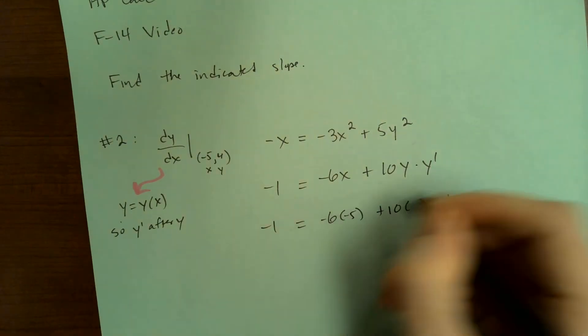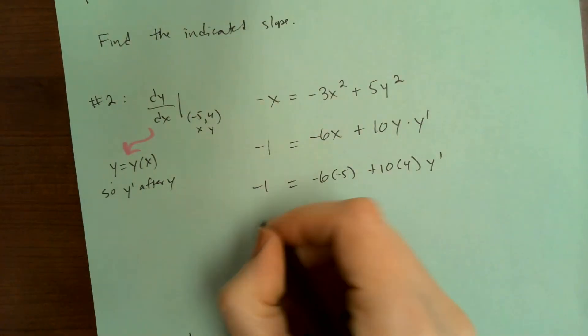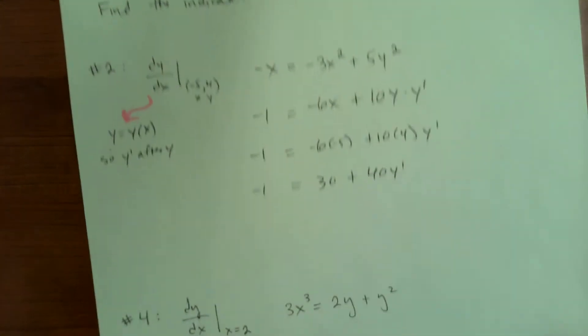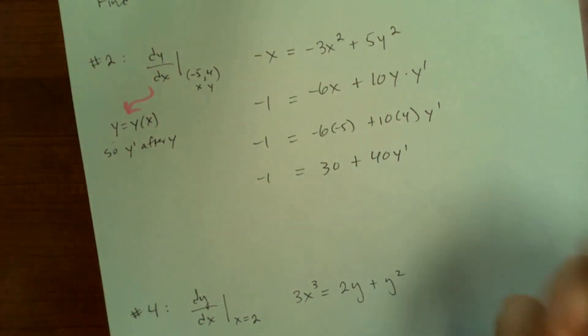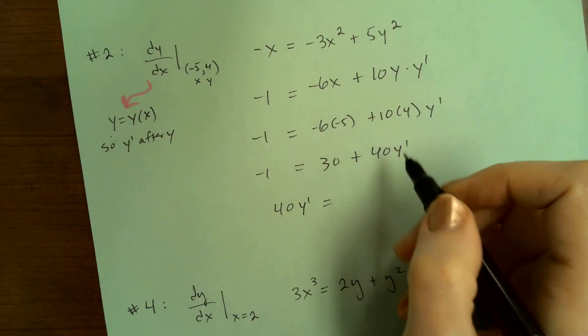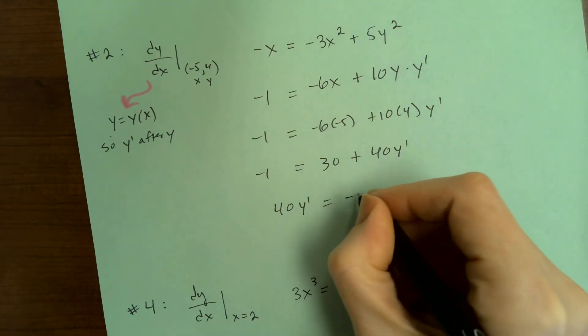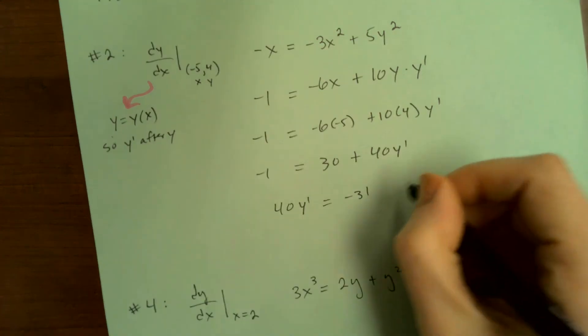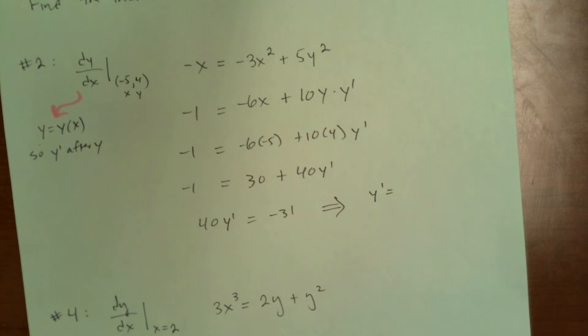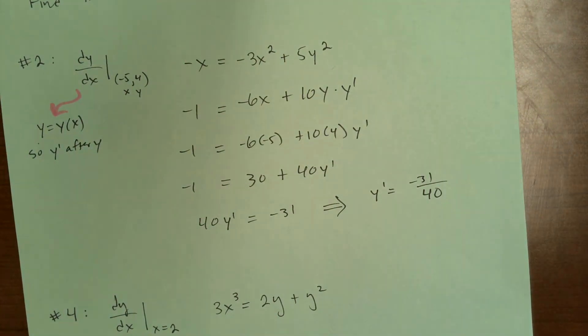So in for x is negative five. In for y is four. So this ends up being negative one is 30 plus 40y prime. So we get 40y prime equals what? Negative 31? Okay. Equals negative 31 over 40.